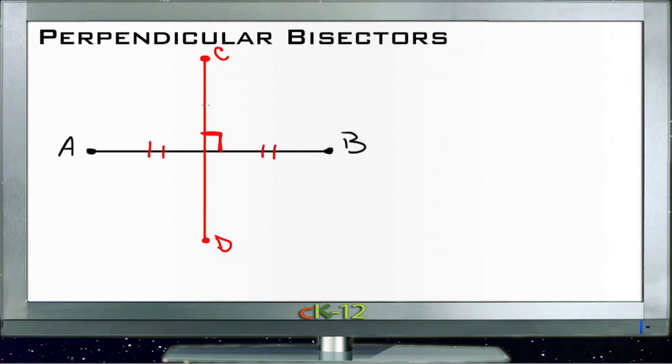Now one of the properties of a perpendicular bisector is that any point on the bisector, let's make these green, any point on the bisector is guaranteed to be the same distance from the opposite points on the line that it's bisecting. So these two distances here will be equal.